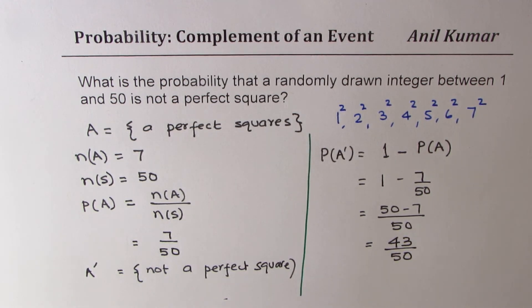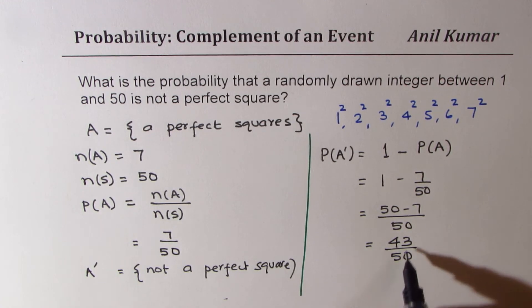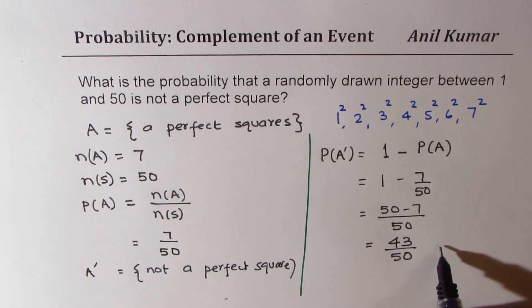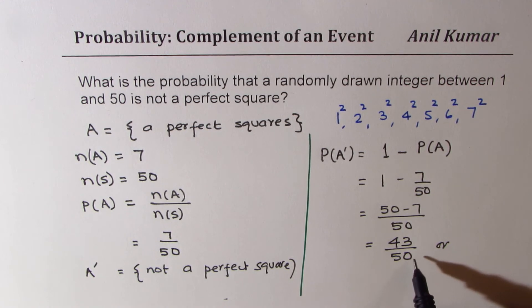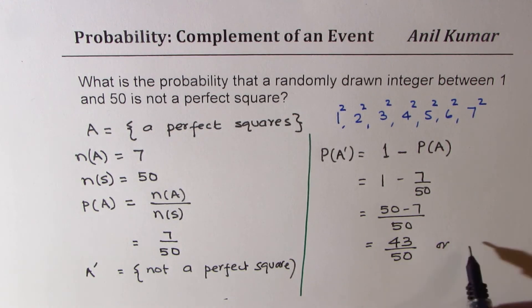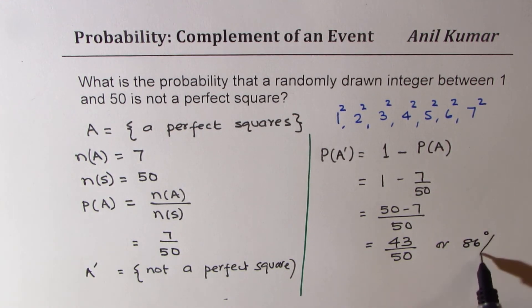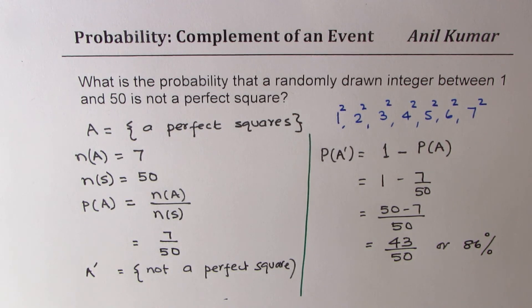In percent, if you want to convert this, you multiply by 100, which gives 86 percent. So that is how you can actually use the complement of an event to find the probability.